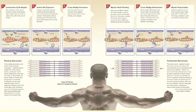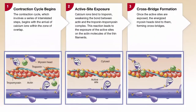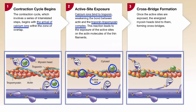The contraction cycle begins when the nervous system activates the release of calcium ions from the sarcoplasmic reticulum. The calcium binds to troponin, a protein in the troponin-tropomyosin complex. This binding changes the shape of the complex by exposing the active sites on the actin molecules of the thin filament.